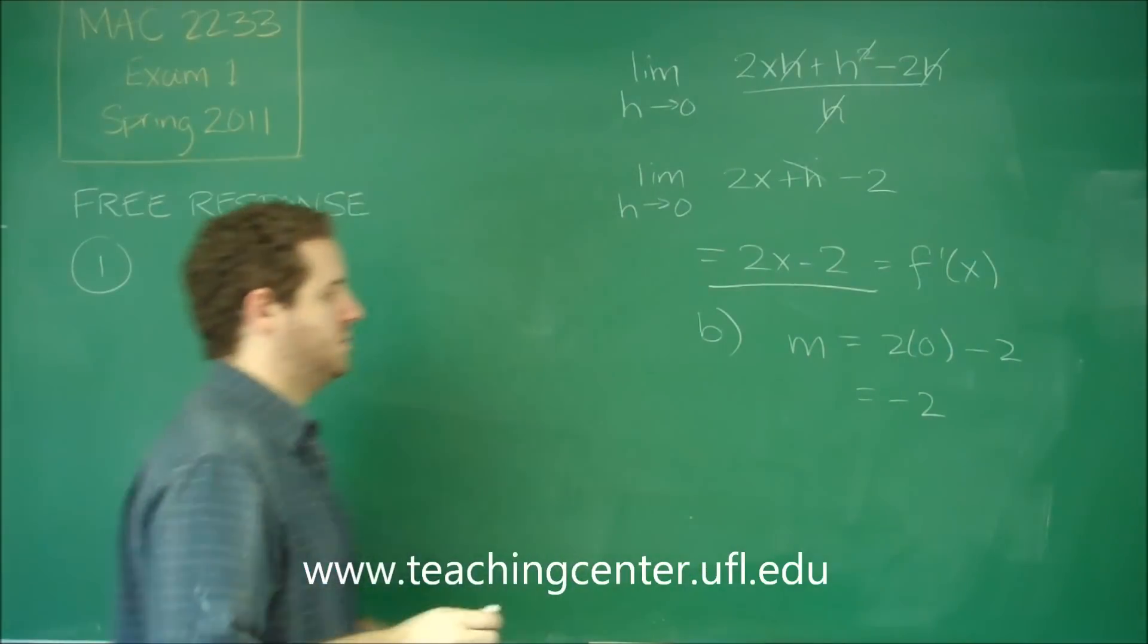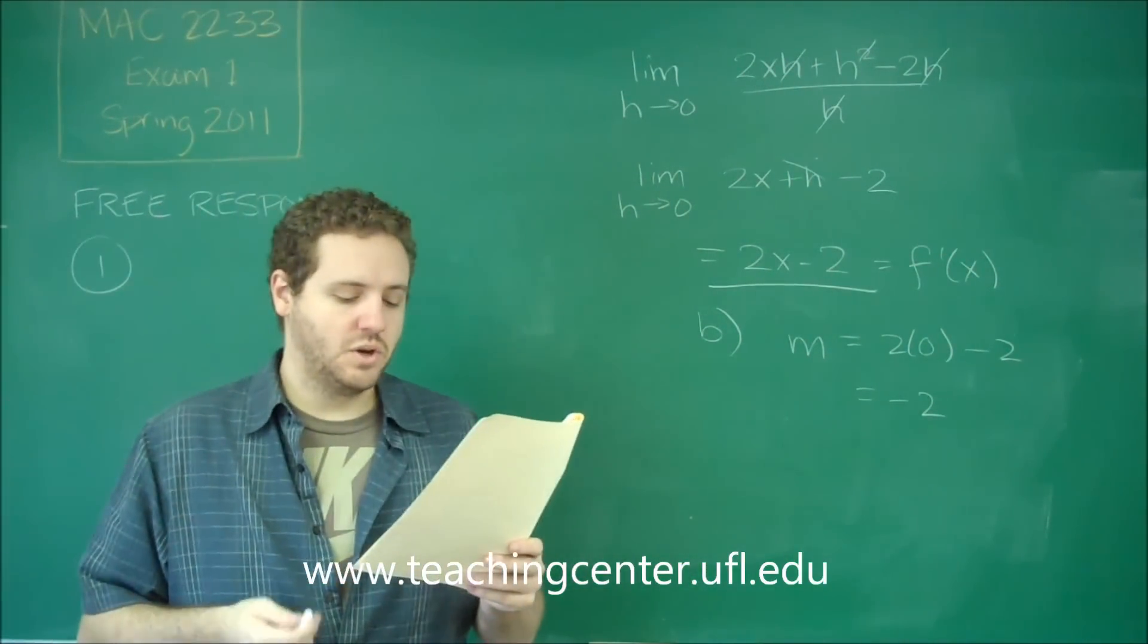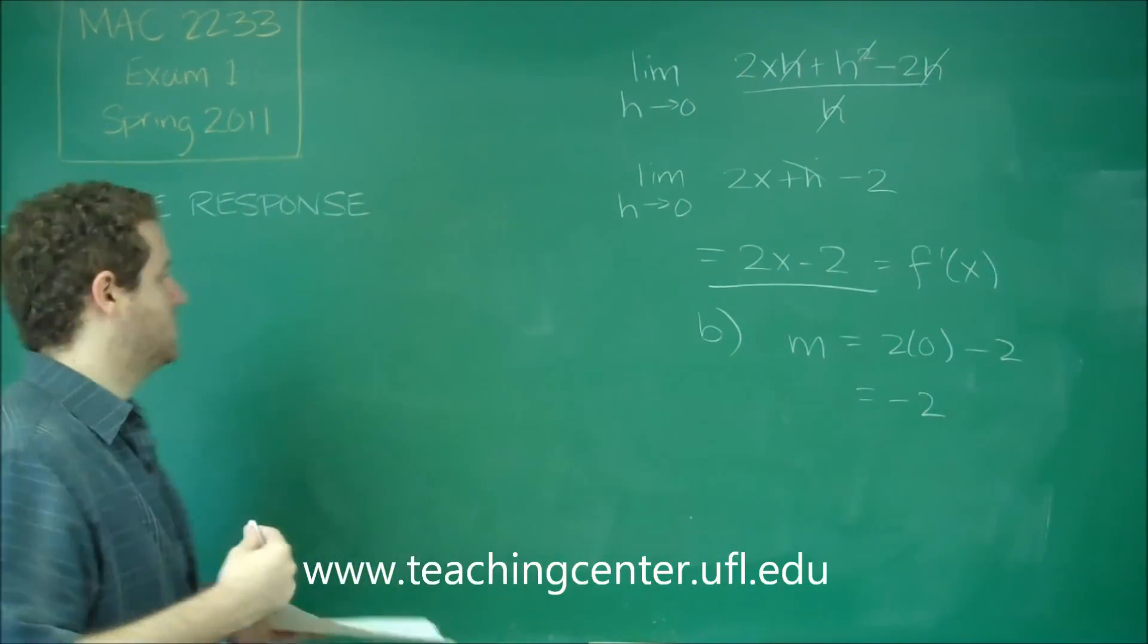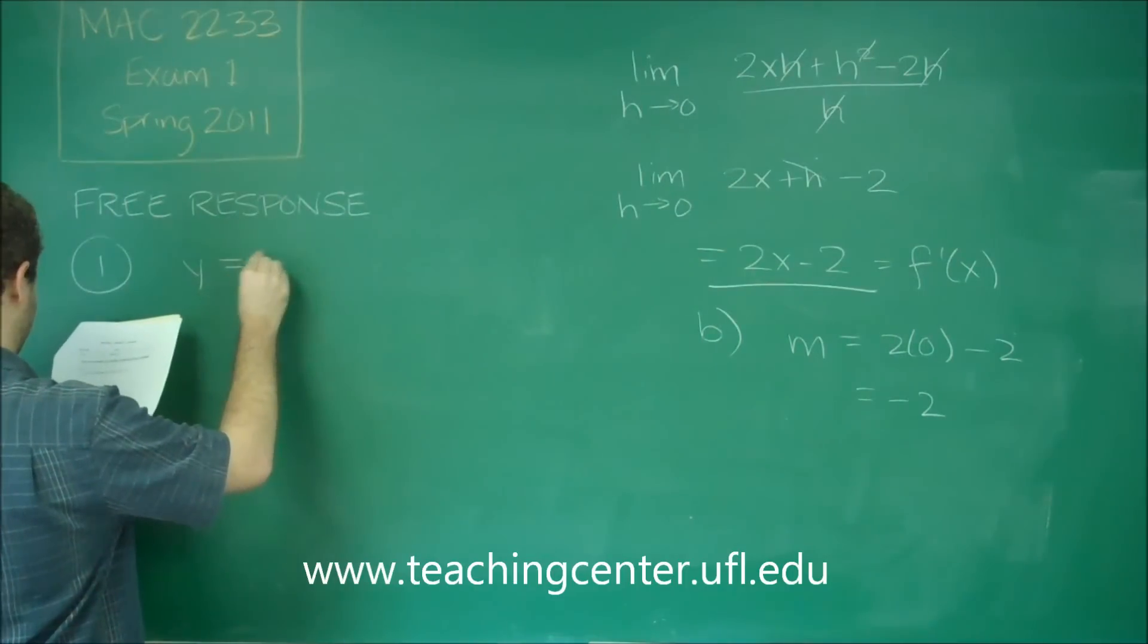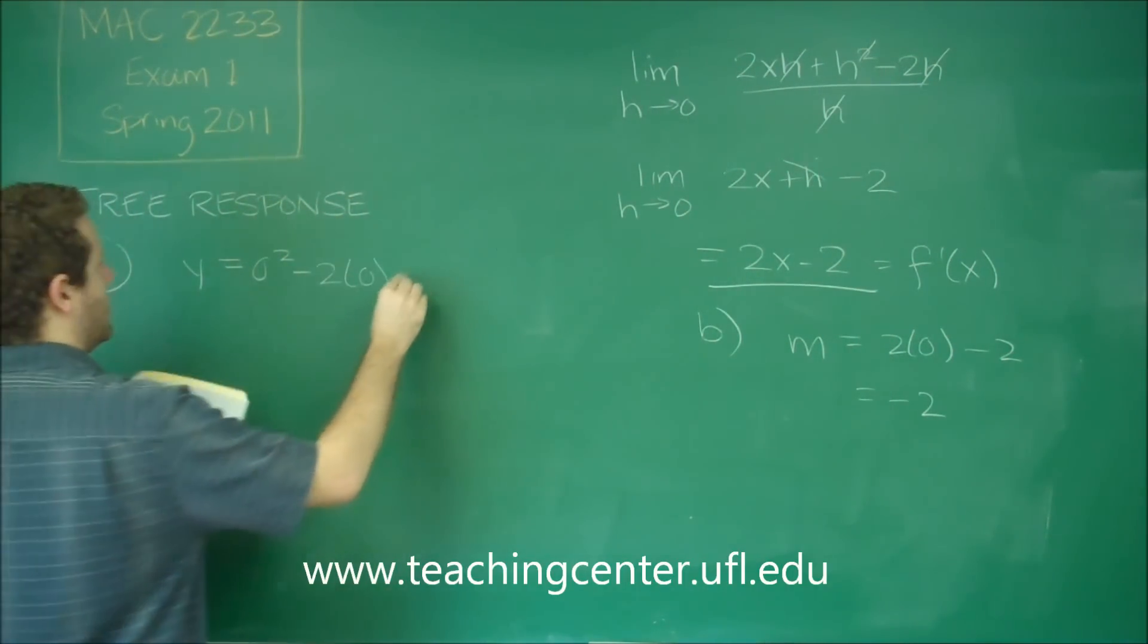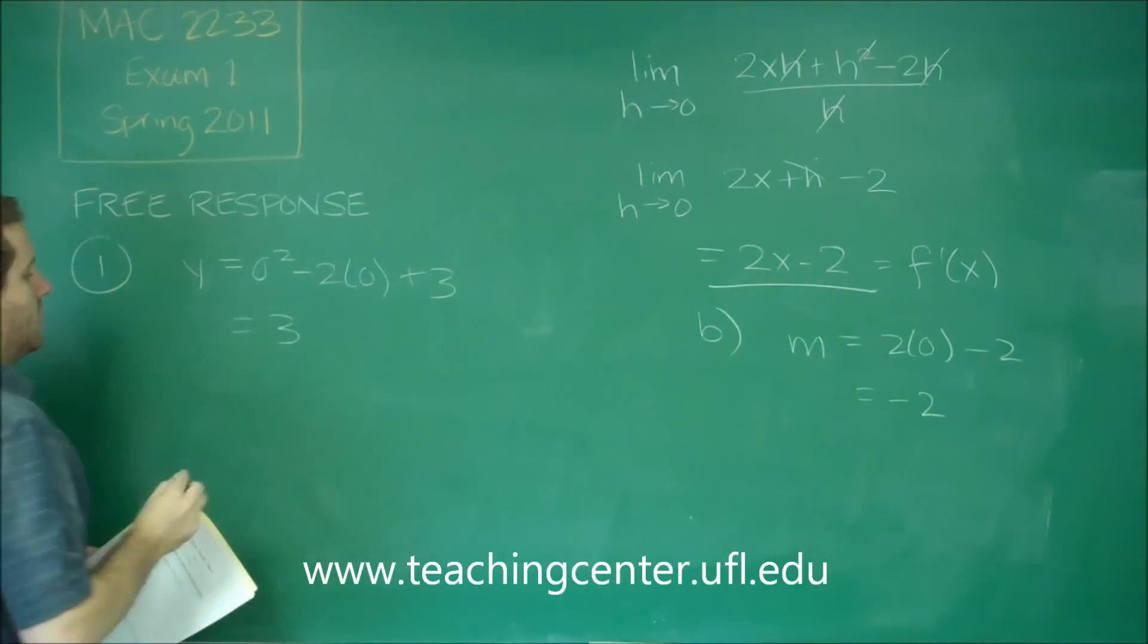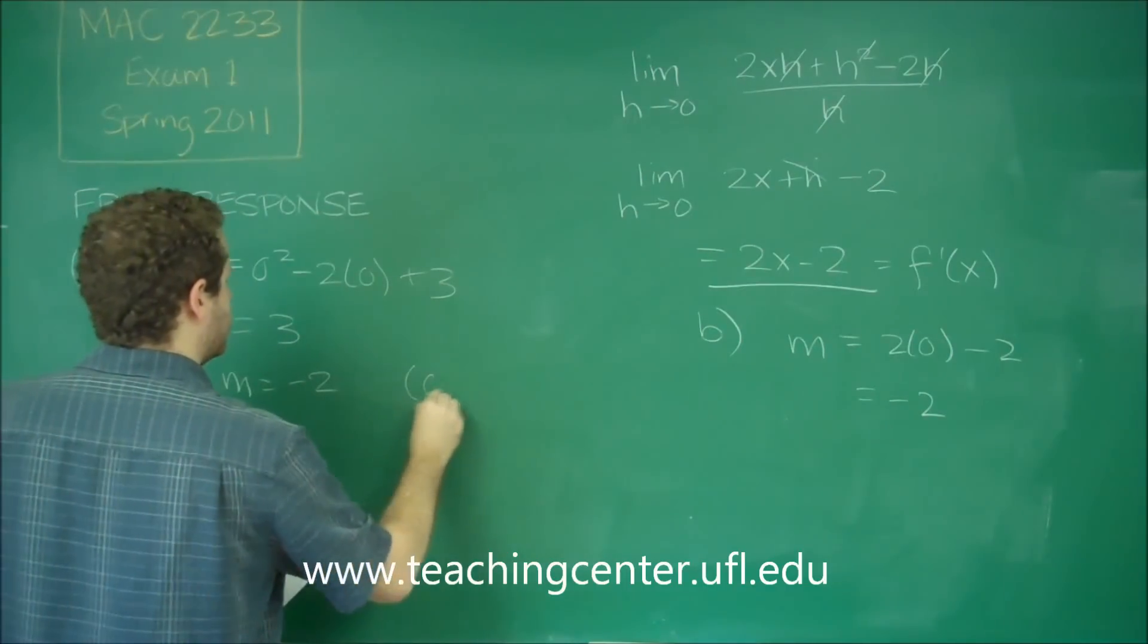So we get that our m is negative 2. And we knew that the x was 0, so we just need the y. But the y, we could just use the original function for. So y equals 0 squared minus 2 times 0 plus 3. We get that y is 3. So we have this slope as negative 2. The point is 0, 3.